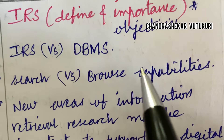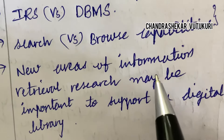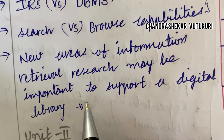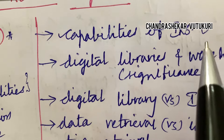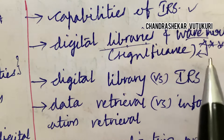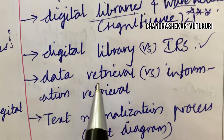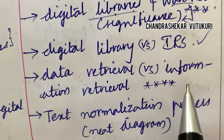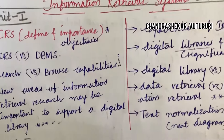Search versus browse capabilities — differences will mostly be asked from Unit 1. New areas of information retrieval research may be important, along with digital library and related terms. The examination capabilities of IRS, digital libraries and data warehouses is a top expected question. Digital library versus IRS differences, and data retrieval versus information retrieval, are also top questions likely to appear in your question paper.